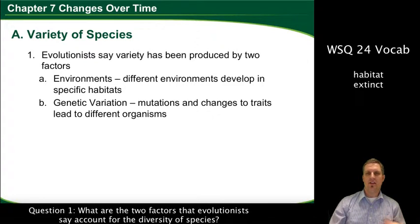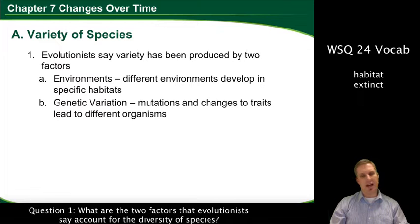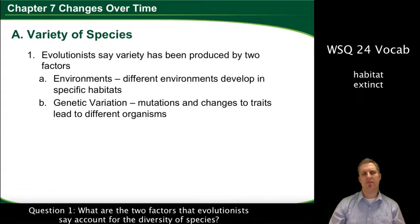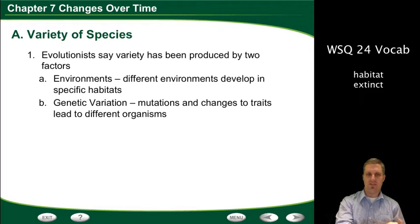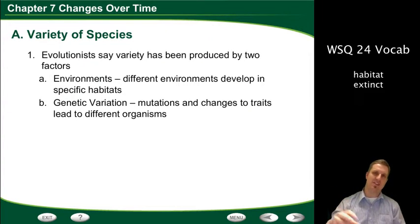Environment refers to the different places where organisms live, which develop into specific habitats. A habitat is a specific environment that provides the things a particular organism needs to survive, thrive, and reproduce. Different environments develop specific habitats, which develop specific organisms — it's almost like the environment decides, as though it's an organism itself, what type of organism lives there.